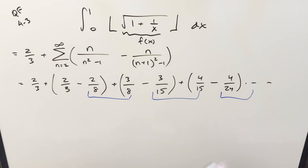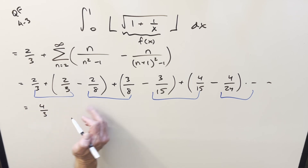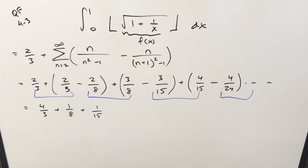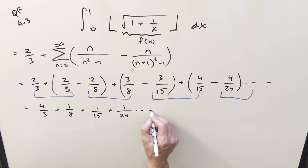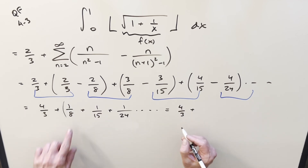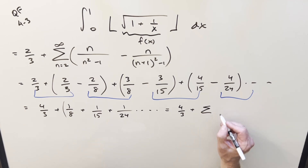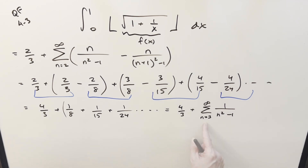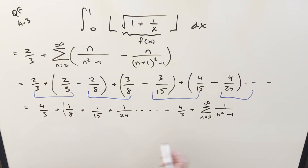Plugging in values starting at n equals 2, the sum gives: 2 thirds minus 2 eighths, then 3 eighths minus 3 over 15, then 4 over 15 minus 4 over 24, and so on. We don't reduce fractions yet because we want cancellation. Grouping the matching denominators, combining 2 thirds with the extra 2 thirds piece gives 4 thirds; 3 eighths minus 2 eighths gives plus 1 eighth; plus 1 over 15, and so on — matching the denominators from our original table.